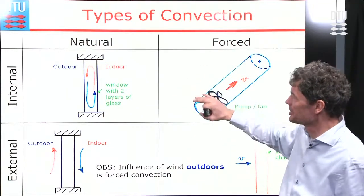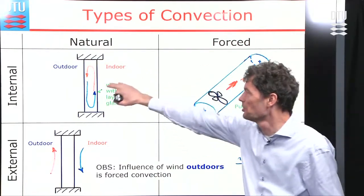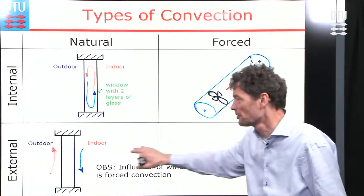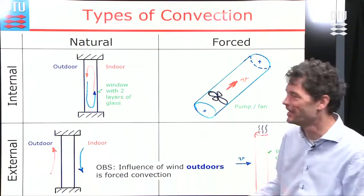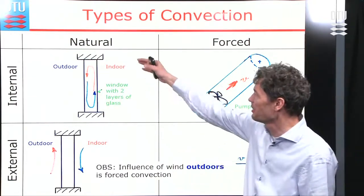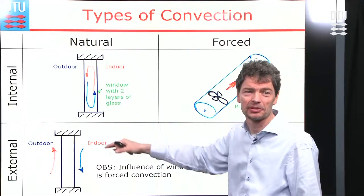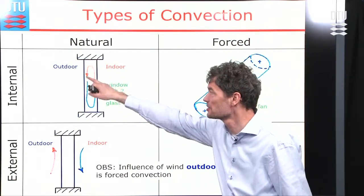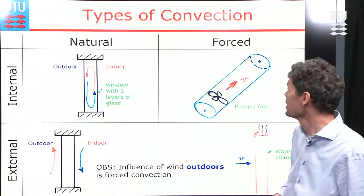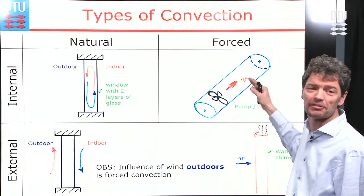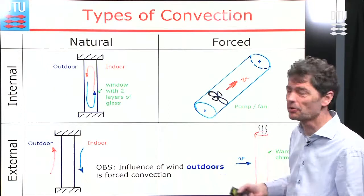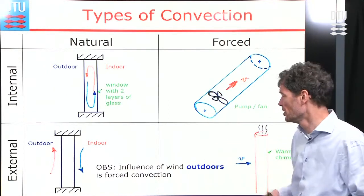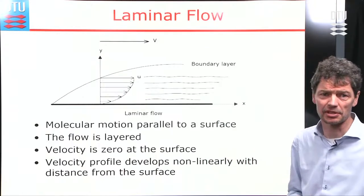Here is a slide explaining internal flows and external flows. The forces can be naturally driven by temperature differences — warm air rises and falls on the cold side — or by forced flow, where a fan pushes the fluid or the wind causes motion.